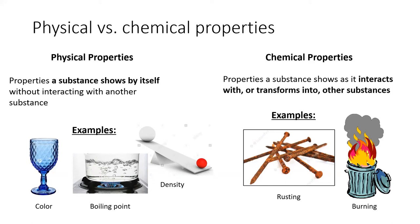Most laboratory measurements measure physical properties. On the other hand, a chemical property is only revealed during a chemical change, when the substance interacts with another substance. There is no way to measure a chemical property without changing the substance's composition. Two classical chemical properties are flammability and corrodability.